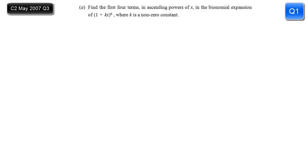In this question we're asked to find the first four terms of the expansion of (1 + kx) to the power 6. The first term is always the first bit in your bracket to the highest power, so 1 to the power 6.